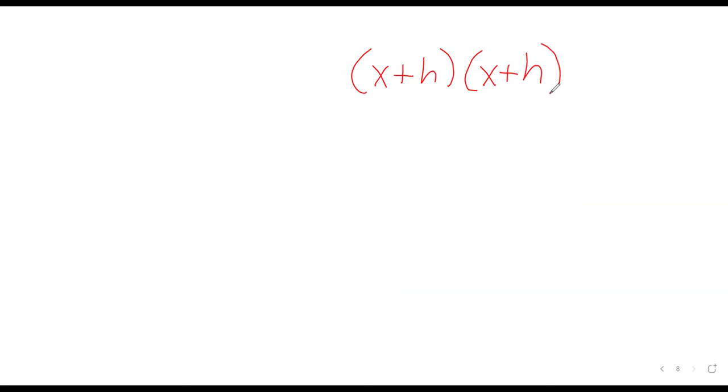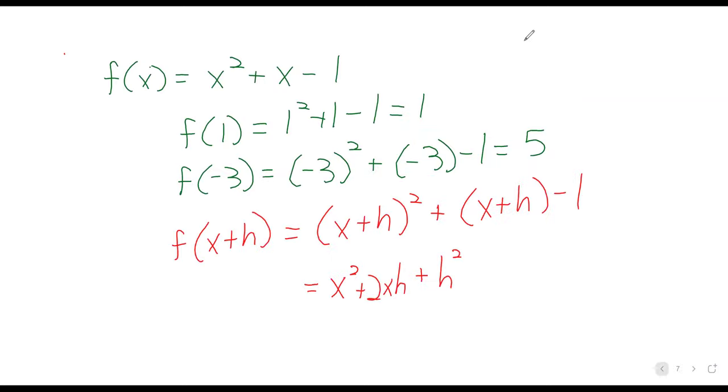You can remember FOIL. We multiply the first terms together, and we get x squared. We multiply the outer terms together, and we get x times h. We multiply the inner terms together, and we get x times h. We multiply the last terms together, and we get h squared. And then, because we have two of those, you see we have two xh's.